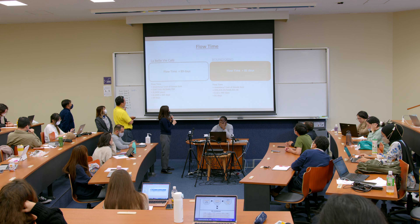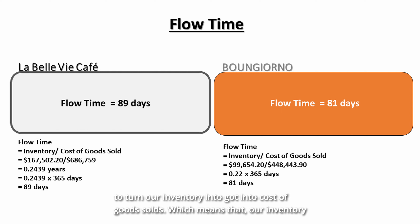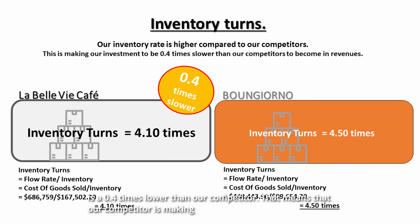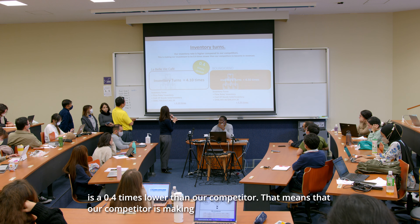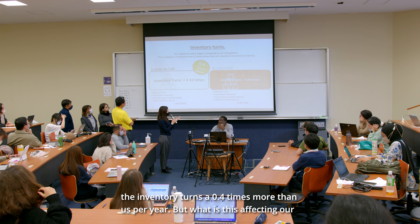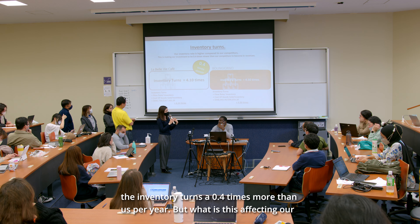So what is the problem? After analyzing some information, we found out that it is taking us eight days more than our competitors to turn our inventory into cost of goods sold, which means that our inventory turns are 0.4 times lower than our competitor. That means our competitor is making inventory turns 0.4 times more than us per year.